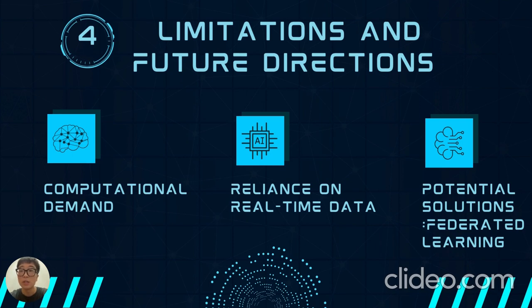In conclusion, discussing limitations, the research faces computational demands and relies heavily on real-time data in IOV. Future directions include improving computational efficiency, augmenting adaptability, and exploring federated learning. Our study highlights how deep reinforcement learning enhances IOV task offloading, reducing delays and boosting energy efficiency. Despite the challenges, ongoing research aims to refine DRL algorithms and explore advanced optimization for connected and intelligent IOV. Thank you for your time.